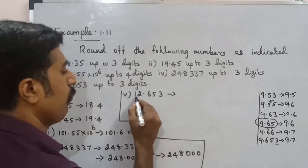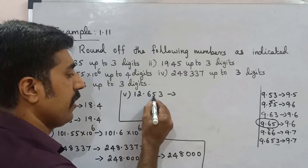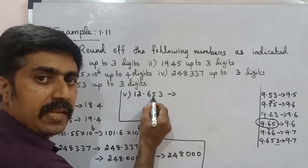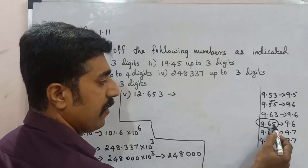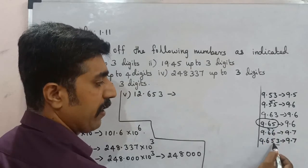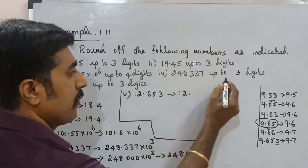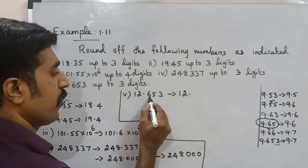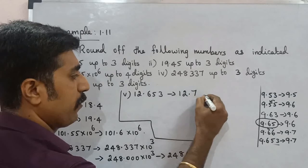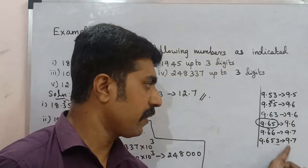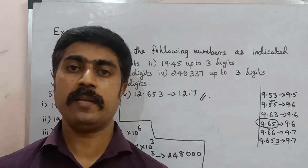Up to three digits — that is 1, 2, 3 — this one will be finished. The last digit 5 is added to the left digit. For 12.653, round to 3 digits: 1, 2, 6 — the fourth digit 5 is the last digit. The preceding digit 6 is even, so drop the 5. Result is 12.6. So practice this method, follow and solve. All the best.